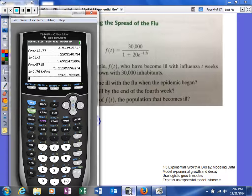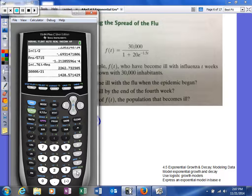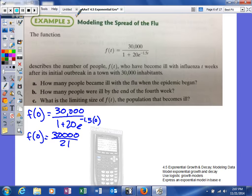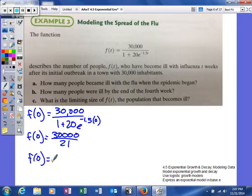We can use our calculator to figure this out. 30,000 divided by 21 gives us about 1,429 people when rounded to the nearest person. So that's how many people initially had the flu in our town.